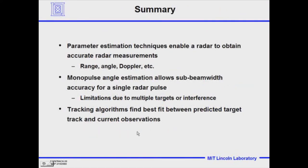In summary, parameter estimation techniques enable the radar to get accurate measurements in range, angle, and Doppler. Monopulse angle estimation allows sub-beam-width accuracy for single-pulse radars. We went over techniques for measuring range and Doppler accurately and noted limitations due to multiple targets or interference. Tracking algorithms help us find and predict the target track and get the best fit between our measured data and the actual location of the target's trajectory.